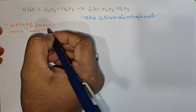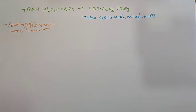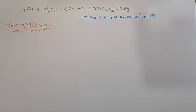When Cement is mixed with water, the setting of Cement takes place to give a hot mass due to hydration of the molecules of the constituents and their rearrangement. To delay the process, we add Gypsum, which slows down the setting process of Cement so that it gets sufficient hardness.